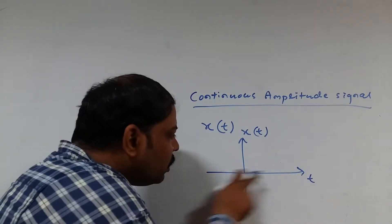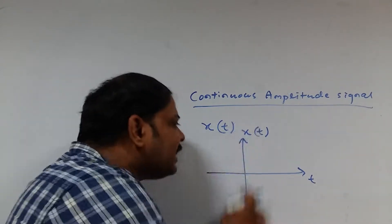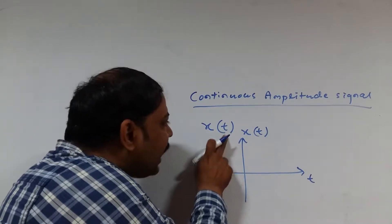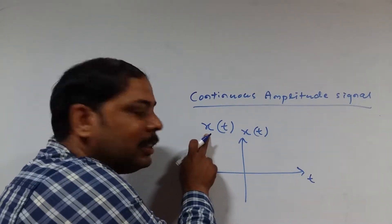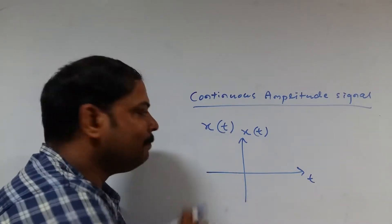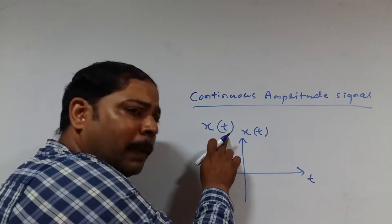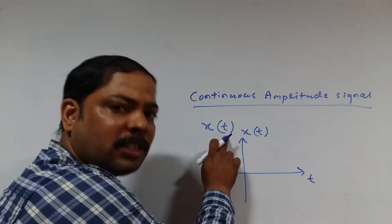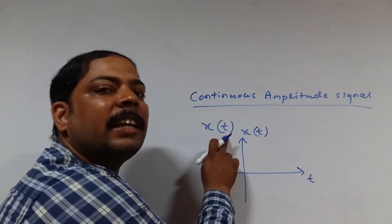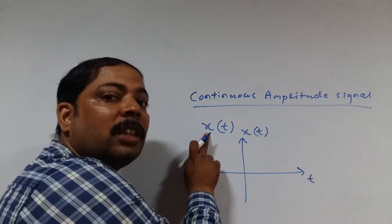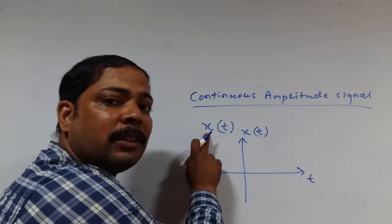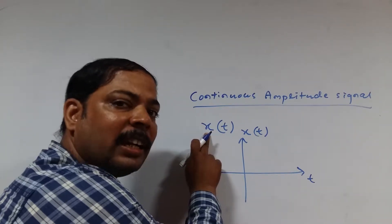This axis is known as the time axis and this axis is known as the amplitude axis. x is a function of time; t is a time variable and x is an amplitude variable. That means x represents amplitude and t represents time. With respect to time, the signal has two classifications: one is continuous time, the other is discrete time. With respect to amplitude, the signal also has two classifications: one is continuous amplitude and the other is discrete amplitude.